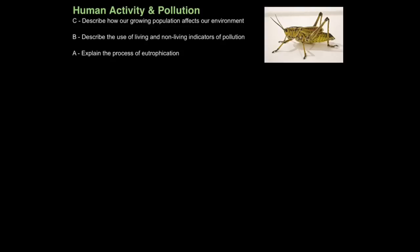In this biology tutorial we'll look at human activity and its impact on the environment, especially with a focus on pollution. The first aim is to describe how our growing population affects our environment. Then we have to describe the use of living and non-living indicators of pollution, and finally explain the process of eutrophication.